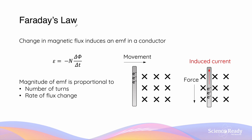Faraday's law of induction states that any changes in magnetic flux — that is delta phi — will induce an EMF in a conductor. This is summarized by the equation: epsilon, which is EMF, equals minus N multiplied by delta phi over delta time, so that's the change in flux over time.